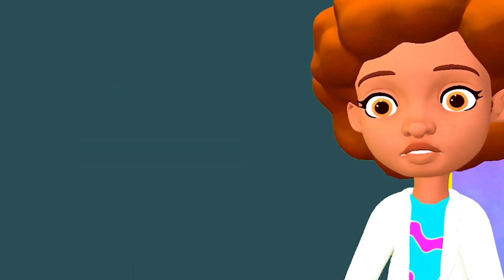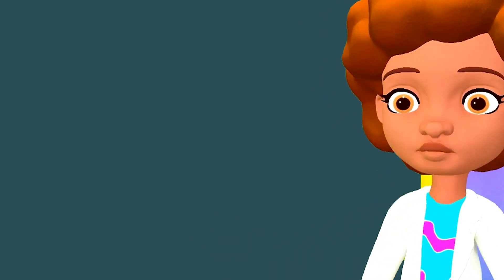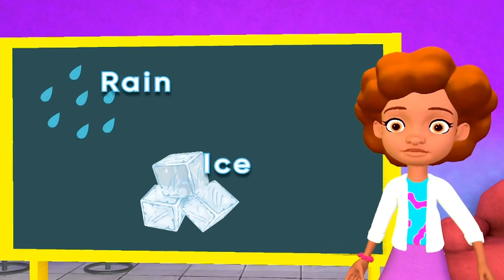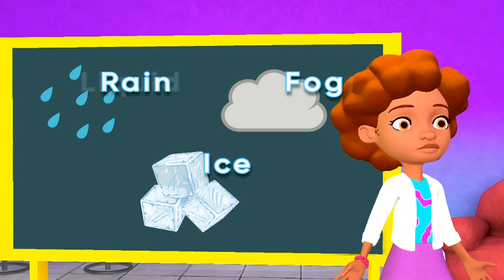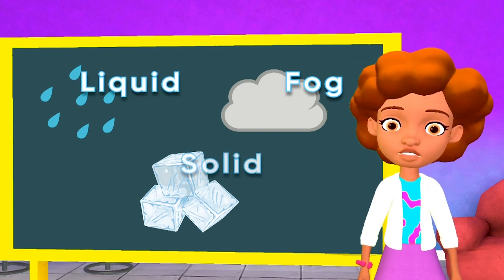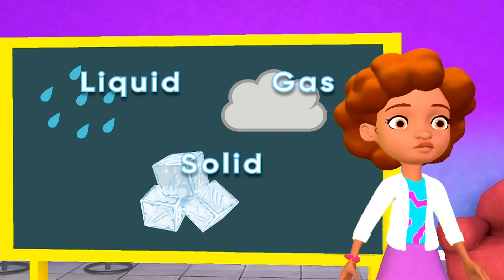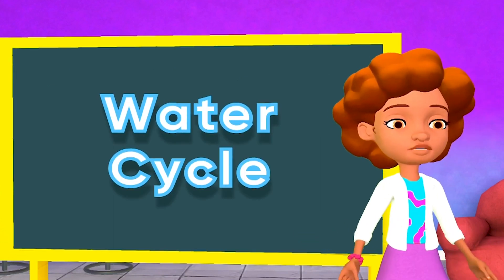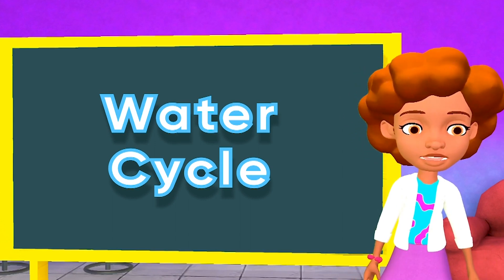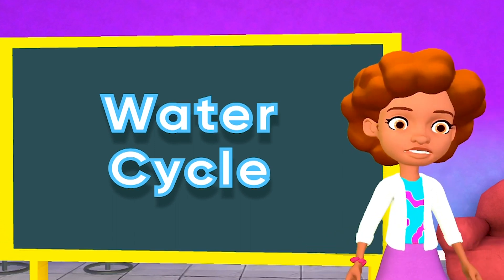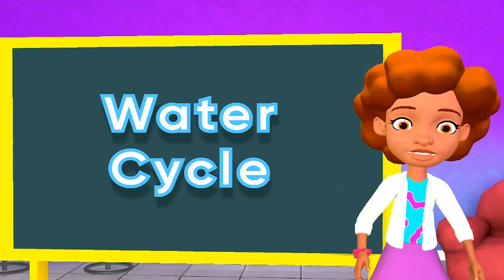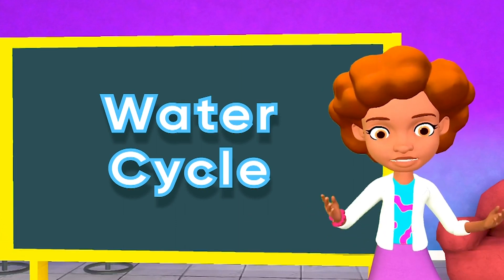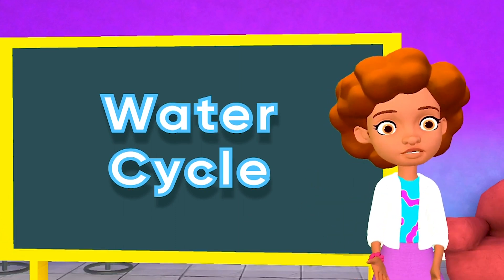Water has many forms. It is all around us, even if you can't see it. It can be found as rain, ice, and fog. It can change from a liquid to a solid to a gas form through something called the water cycle. The water cycle refers to how water moves within our planet and atmosphere. It is a large and complex process, but let's break it down into four simple stages.